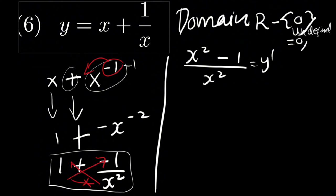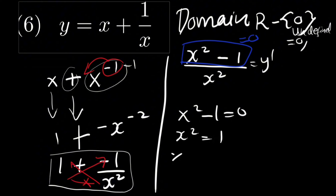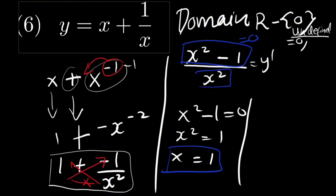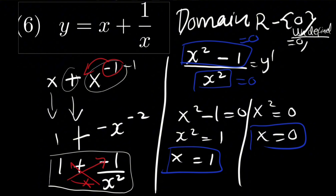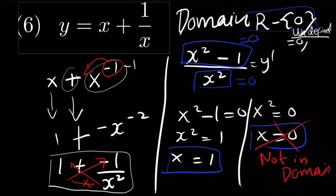The derived function equals zero when the numerator equals zero: x squared minus 1 equals zero, so x squared equals 1, giving x equals 1. This is the first critical point. The function is undefined when the denominator equals zero: x squared equals zero, so x equals 0. Because 0 is not inside the domain, we do not consider it as a critical point. Therefore, we take x equals 1 as the critical point.